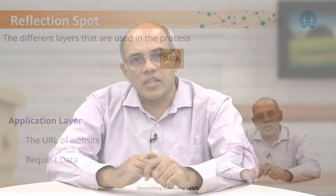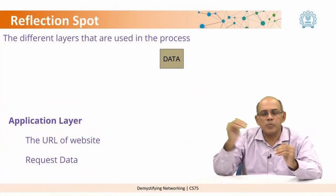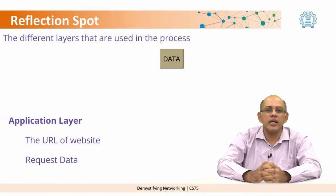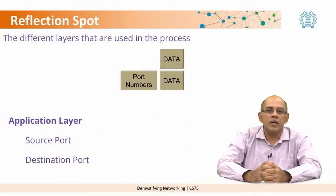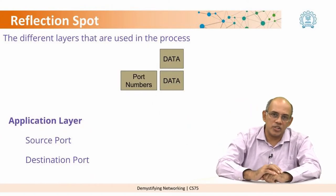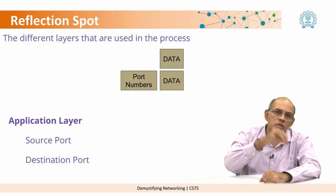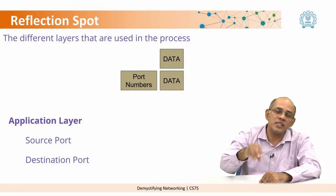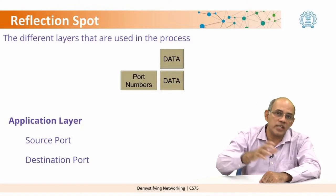Many of you may have thought about the different layers that come into the process. The request is generated by the application. What is the corresponding information that the application layer provides? It provides the source and the destination. You know the source, you know the source port, you know the destination and you know the destination port.